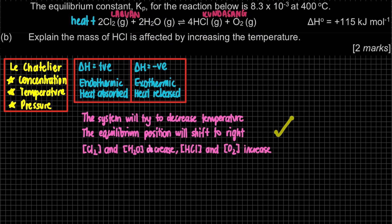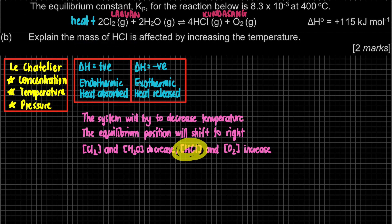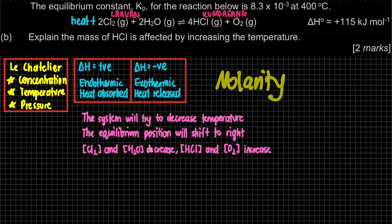This is the explanation when a question asks about a disturbance. Since the question specifically asks about the mass of HCl, we first need these three explanatory points before concluding about mass. When they ask for mass and we have molarity, we use the relationship: Molarity = mol/volume, and mol = mass/molar mass.